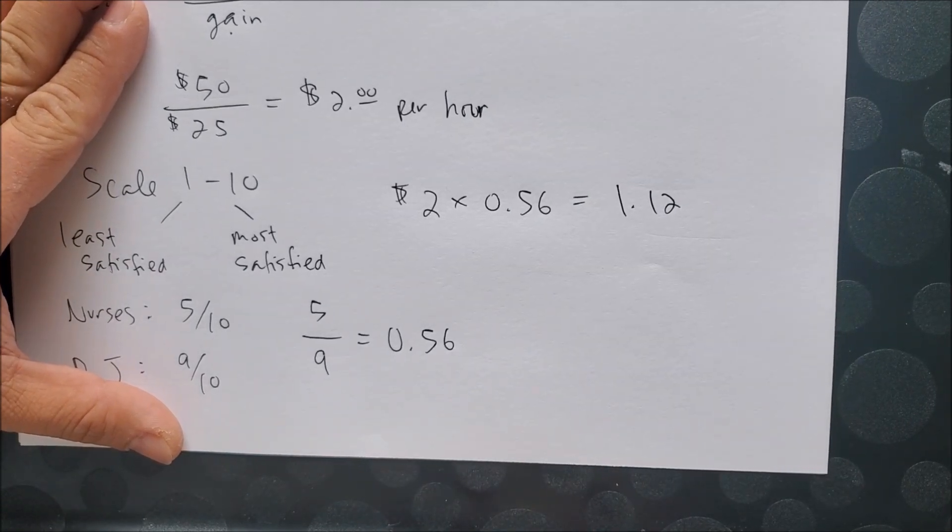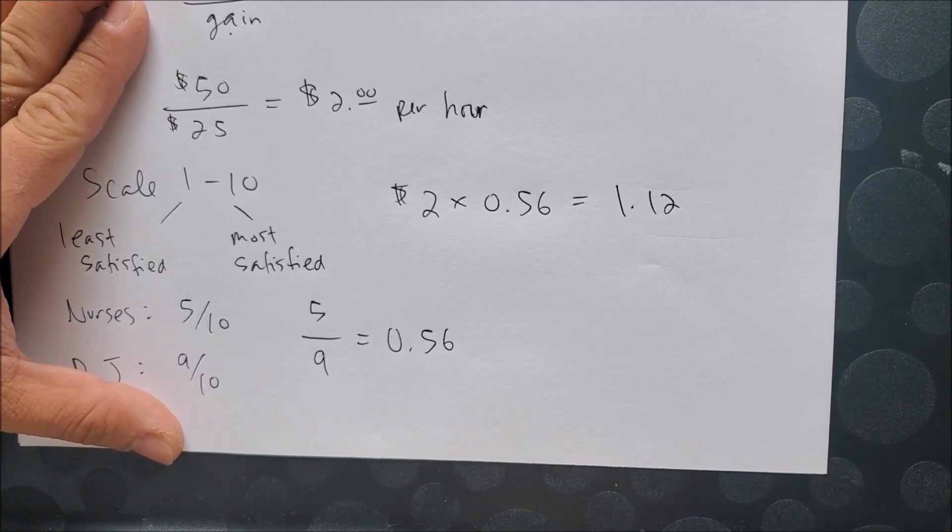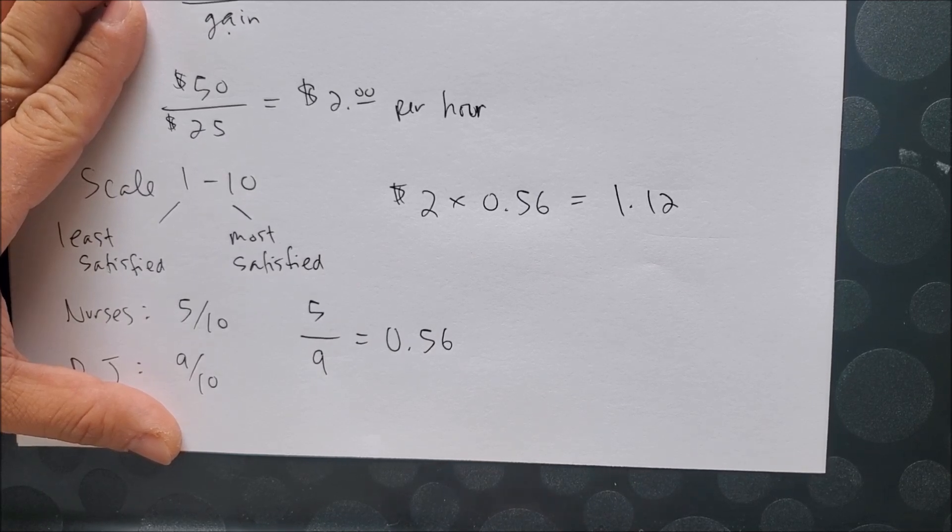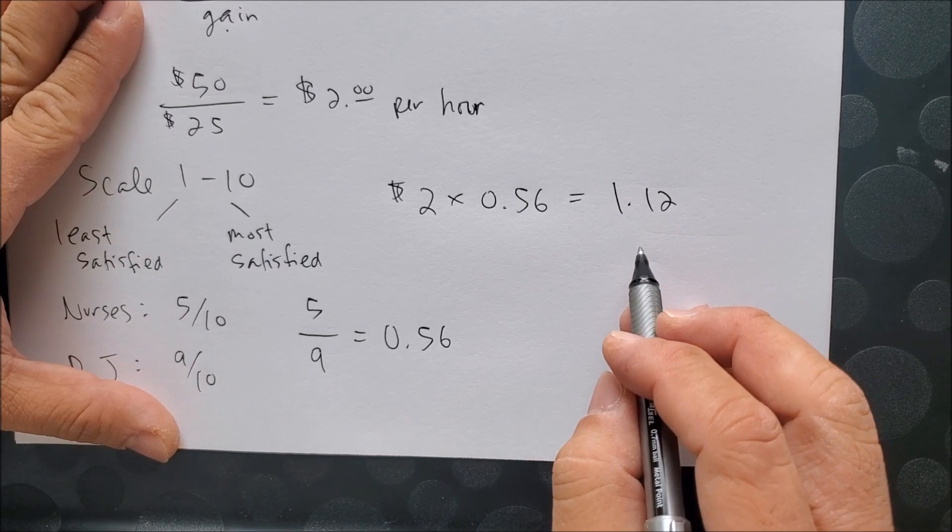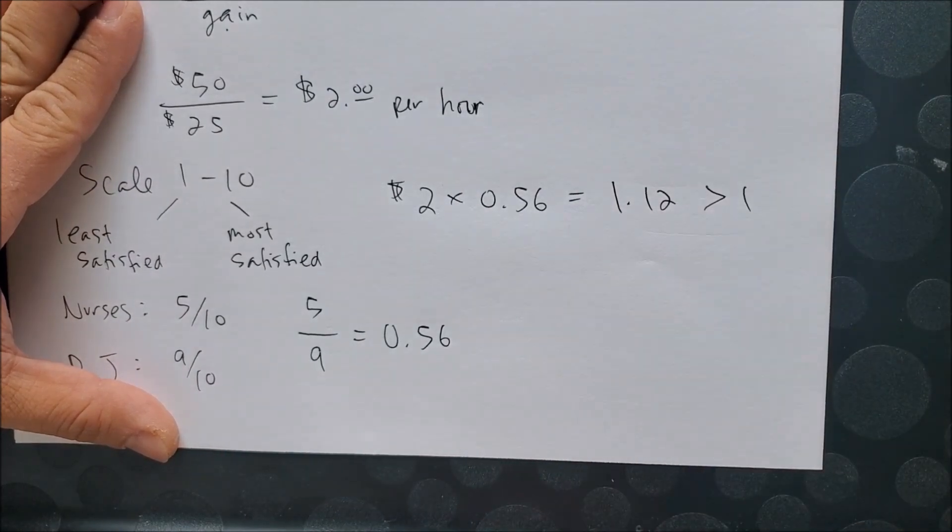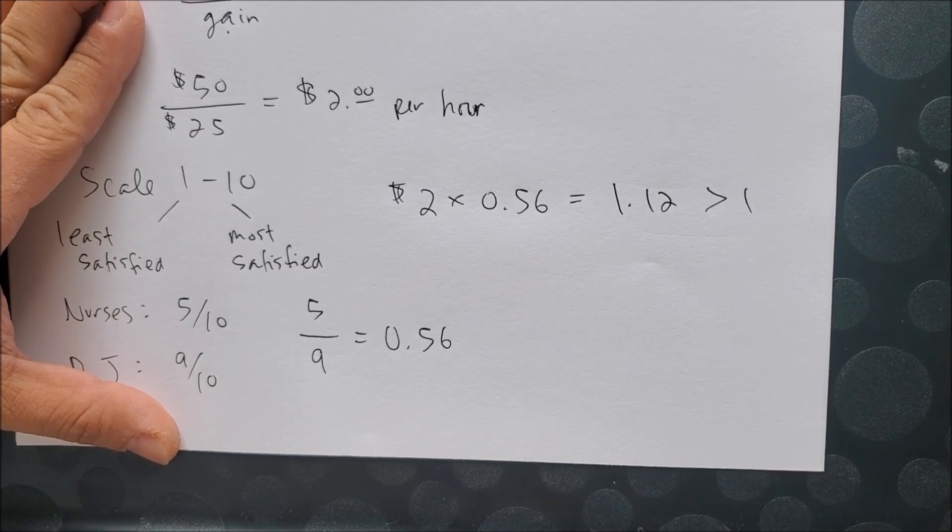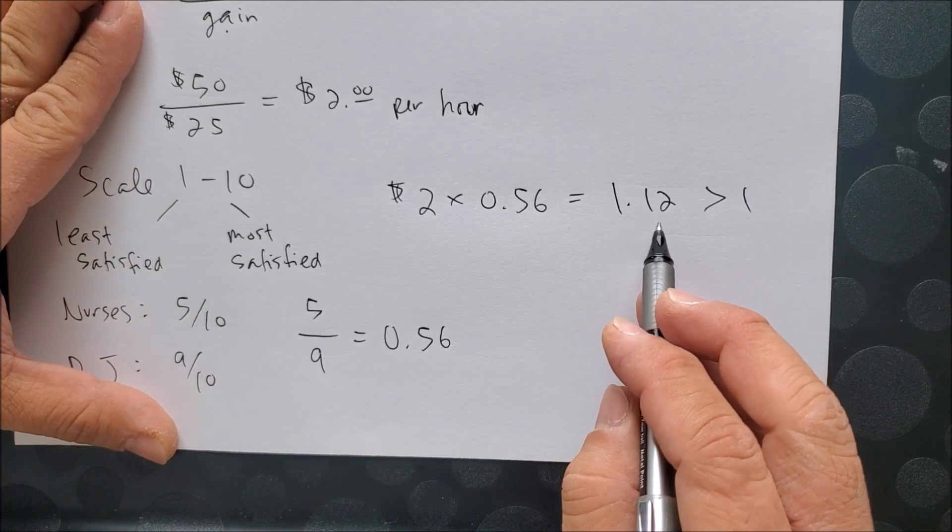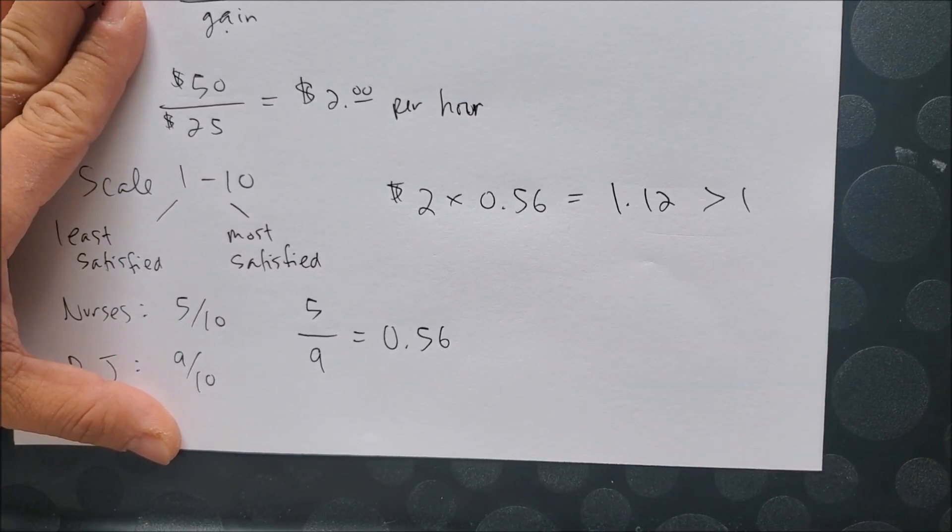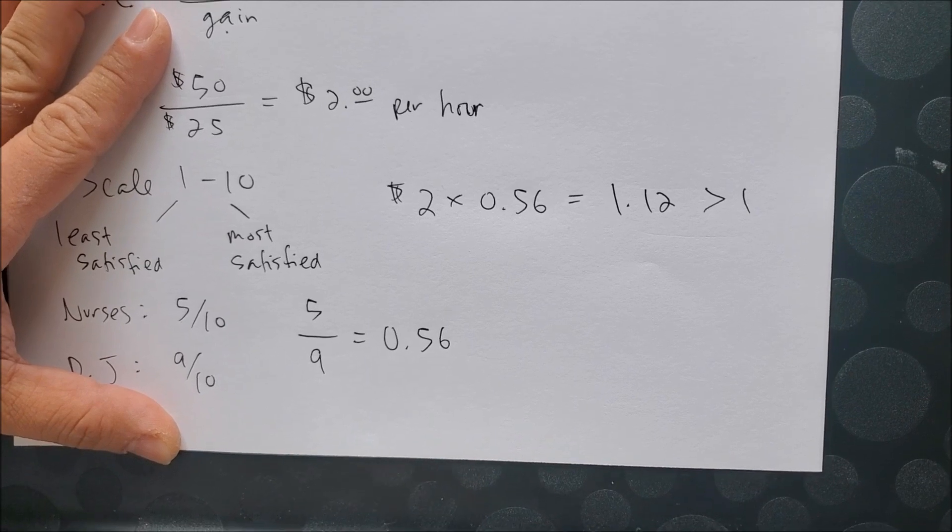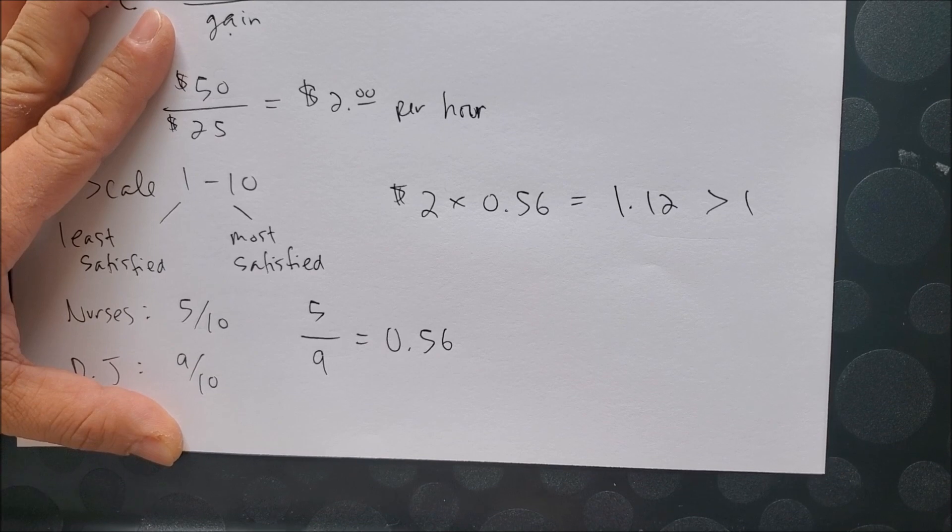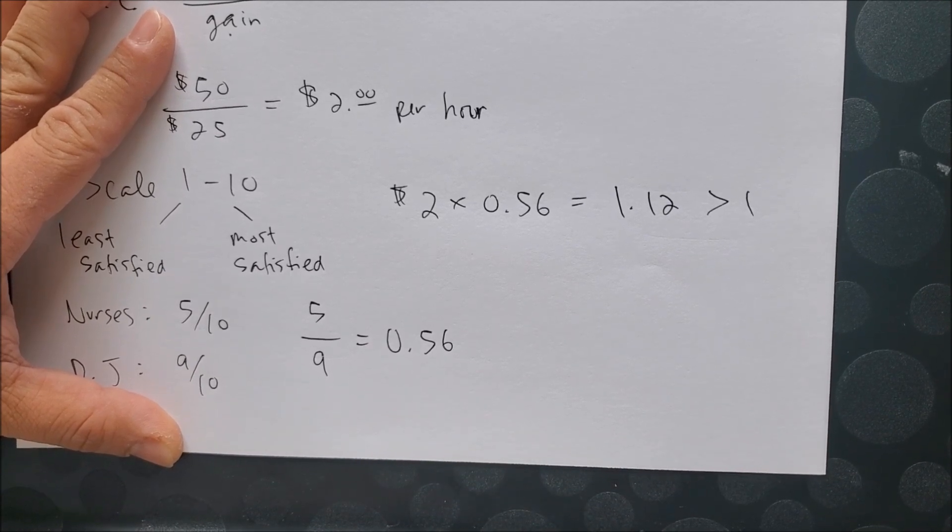And this is how we know if it is worth becoming a DJ or switching your occupation and becoming a nurse. Any number that is greater than 1 tells us that it's a good time to switch your career for the other career. In other words, 1.12 tells us that the amount of money you lose as a nurse outweighs the satisfaction you get as a DJ.